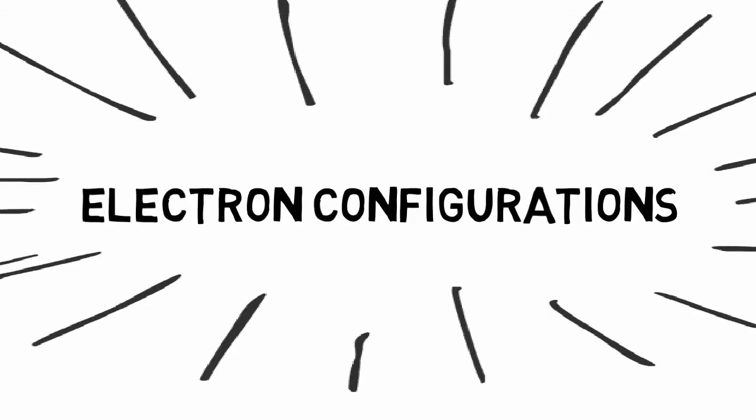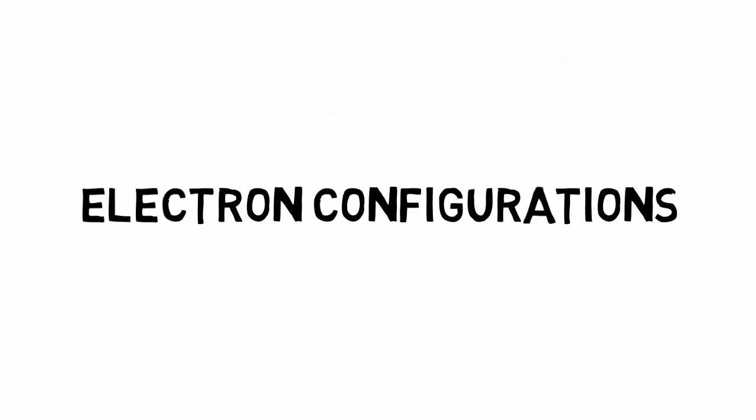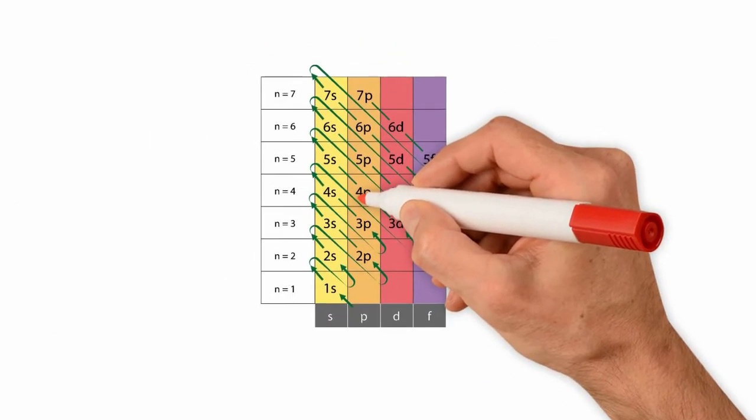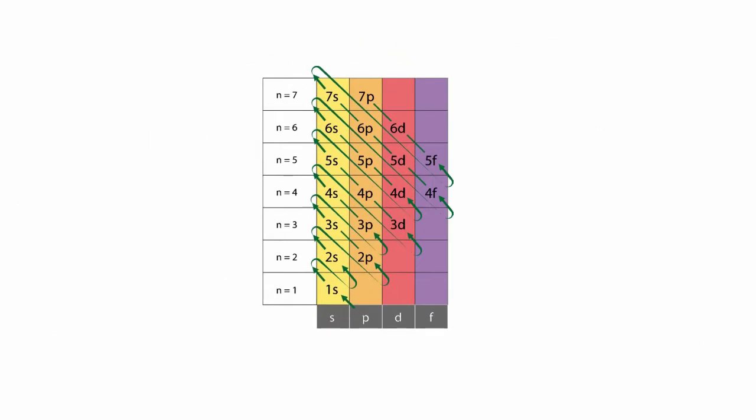This video demonstrates how to write electron configurations and draw orbital diagrams for main group elements. To write an electron configuration you could memorize the order in which orbitals are filled according to their energy level, but a more convenient method is to use the periodic table.